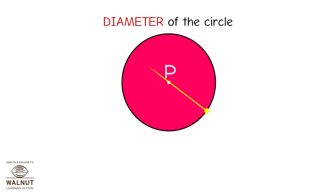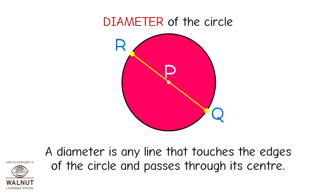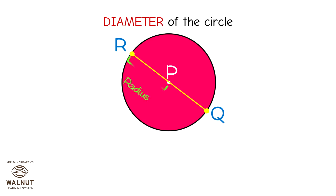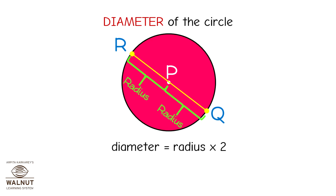The diameter of a circle is any line that touches the edges of the circle and passes through its center. The diameter is made up of two radii, PR and PQ. The diameter is always double the radius, and the radius is always half the diameter.